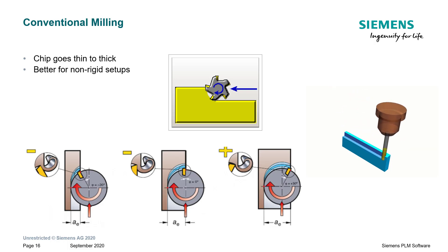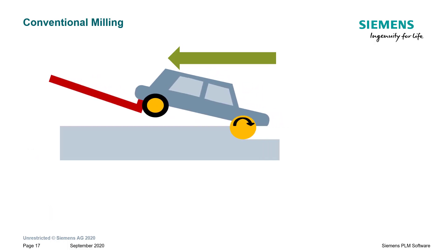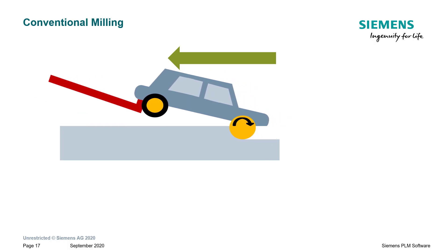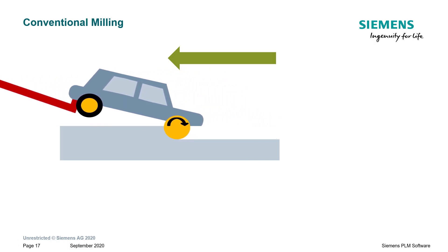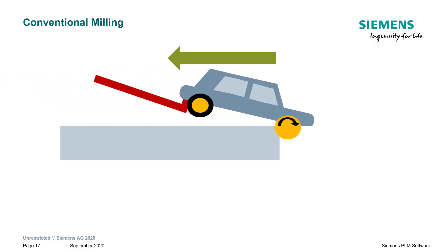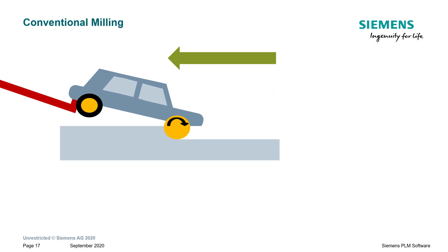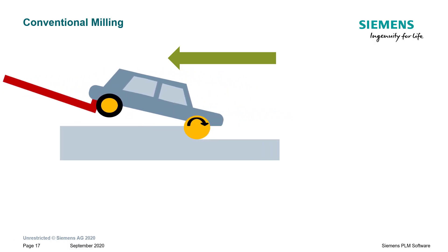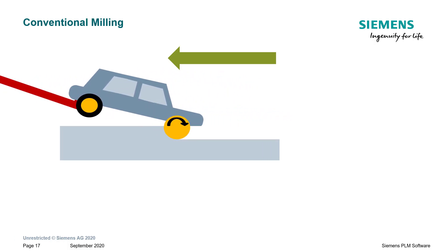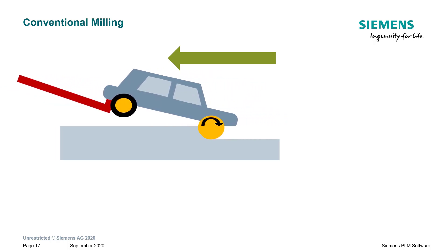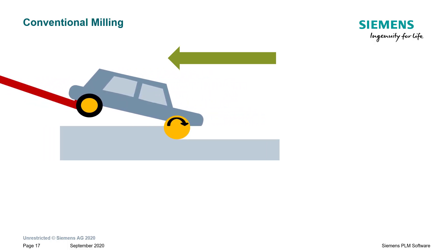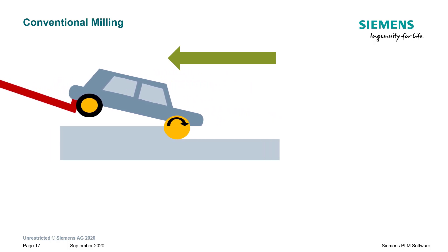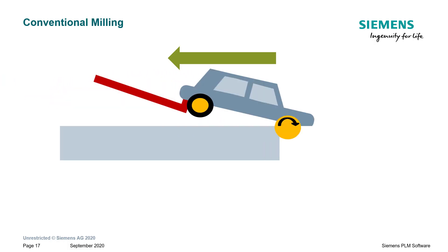Going back to that car analogy: imagine you parked in an illegal parking spot and the tow truck came to move your car. However, you're still in the driver's seat, the engine is on, and you put it in drive and hit the gas. The tires, in this case, are going to be conventional milling.